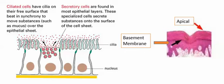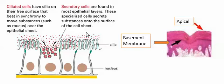Notice how we have the nucleus and the cilia, and that the cilia on the free surface beat in synchrony to move substances such as mucus across the epithelial sheet. The secretory cells are found in most epithelial layers, and these are specialized cells that secrete substances onto the surface of the cell membrane.